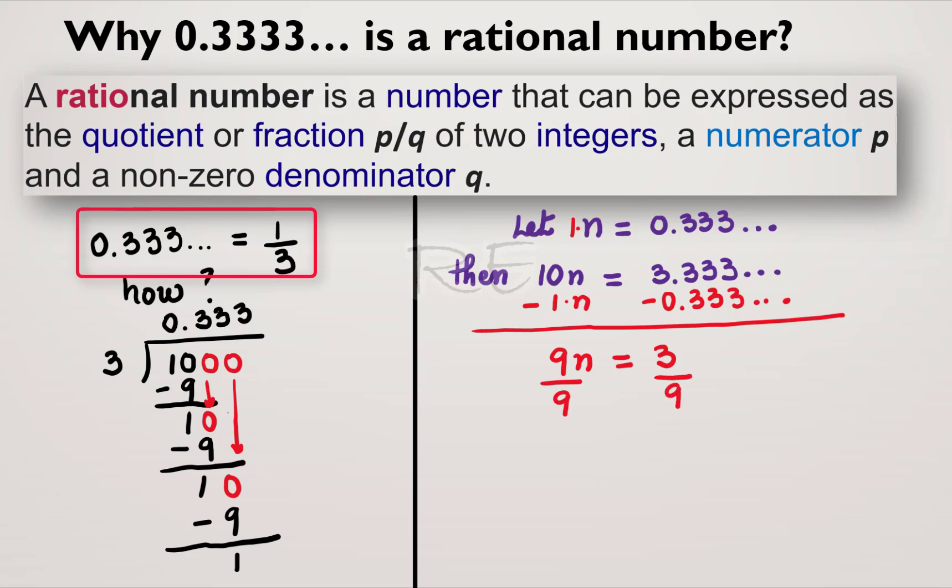All we have to do now is divide by 9 to get n. And n will be equal to 3 over 9. When we reduce the fraction, we divide by 3. n is equal to 1 third. So 1 third is equal to 0.333 repeating. So 0.333 is a rational number.